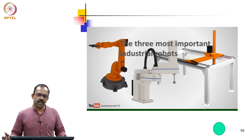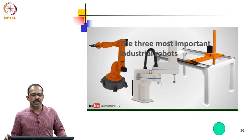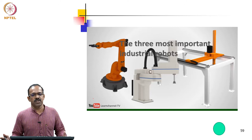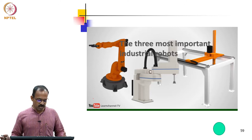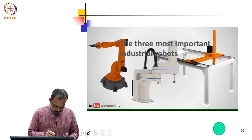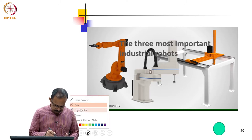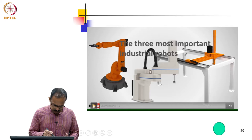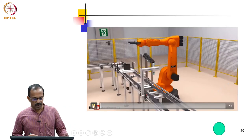We found that there are five types of architectures that are possible for industrial robots. I will show you a small video here to highlight three important types of robots: the jointed arm architecture, the Cartesian robot, and the SCARA robot.